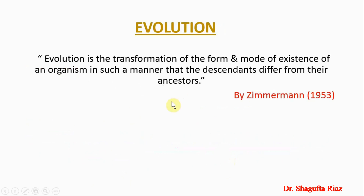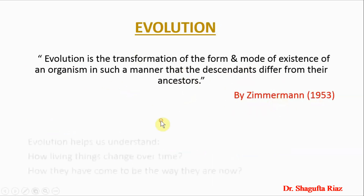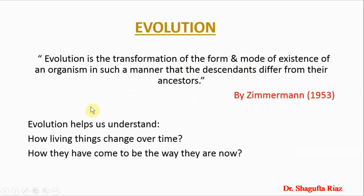There is another definition given by Zimmerman in 1953, which states that evolution is the transformation of the form and mode of existence of an organism in such a manner that the descendants differ from their ancestors. This is essentially the same definition explained earlier in simple words. We study evolution because it helps us understand how living things — animals and plants — have changed over time and come to be the way they are now.